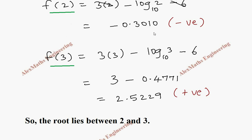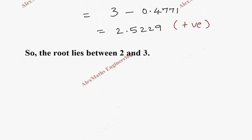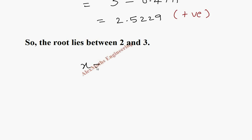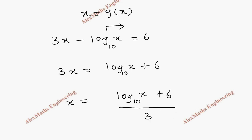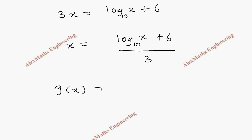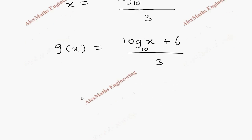Now we have to write x in terms of x itself, that is x equal to g of x. Our given function is 3x minus log x base 10 equal to 6. Taking log x base 10 to the other side, we get 3x equal to log x base 10 plus 6, so x equals log x base 10 plus 6, whole divided by 3. Let's take this as g of x: g of x is log x base 10 plus 6, whole divided by 3. Now we have to find its derivative.